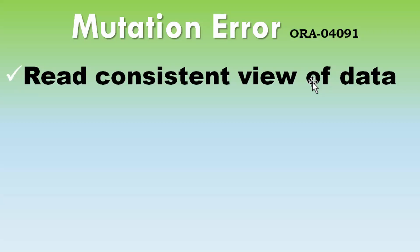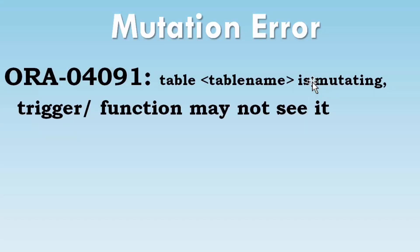What is mutation? Mutation is an error which occurs after breaking the read consistency rule. Oracle has a very beautiful and unique feature called the read consistency view of data. Whenever a developer tries to break this rule, a mutation error occurs and stops the developer. So we can say mutation is a friend of the developer — it always prevents developers from breaking this rule.